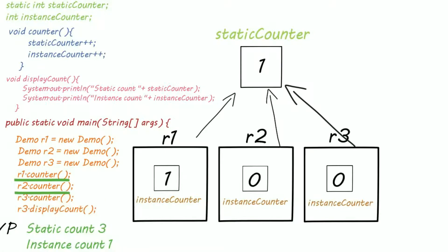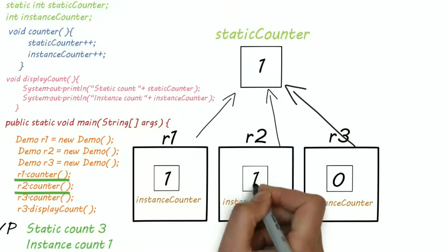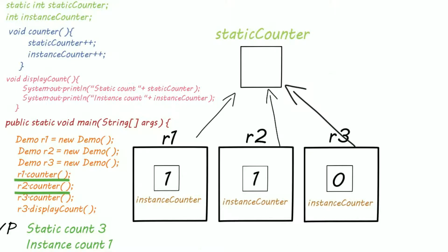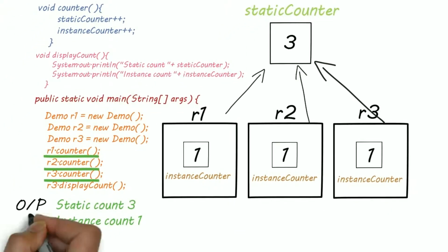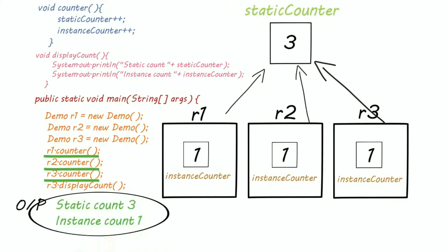The same procedure occurs when r2 calls counter — static counter is incremented to two. Finally when r3 calls the counter method, instance counter in r3 is incremented by one and static counter is incremented to three. So the output shows that the static variable has 3 and the instance variable has 1.